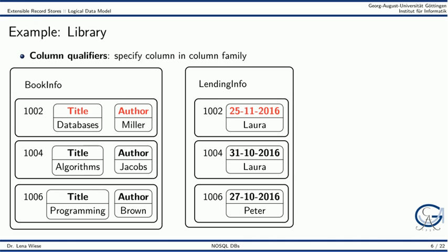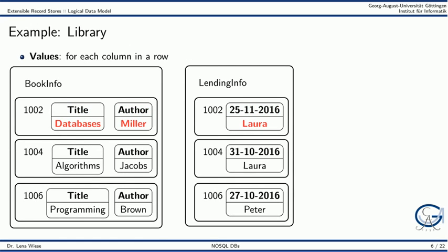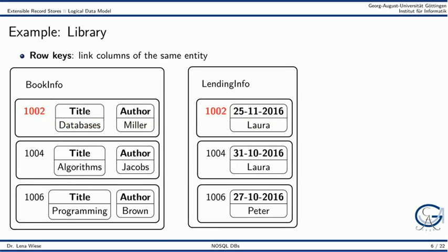In the column family LendingInfo, we can, for example, use the return date as the column name. We can then assign values to each column in a row. The row key acts as a unique identifier. With a row key, we can link columns across different column families.